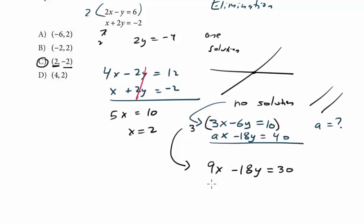I'm just going to copy the second equation down: AX minus 18Y equals 40. So we do have the same Y coefficients. We want different Y-intercepts. For these to have the same slope, A would equal 9. That's what no solution is—same X and Y coefficients but different Y-intercepts.